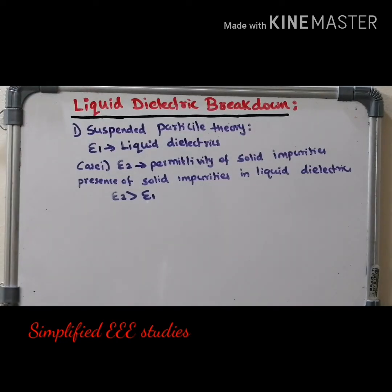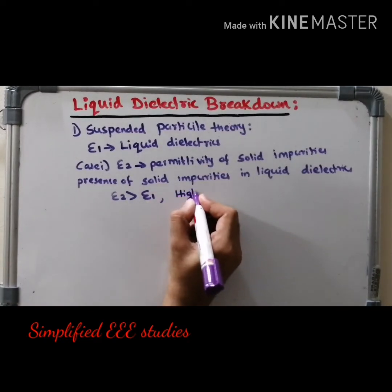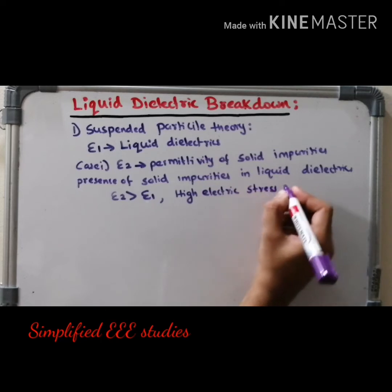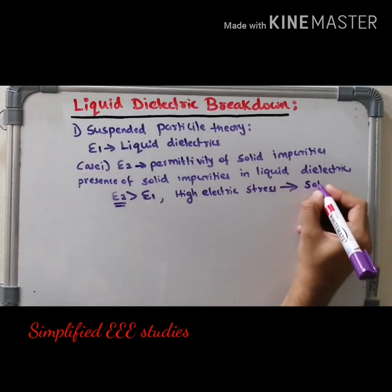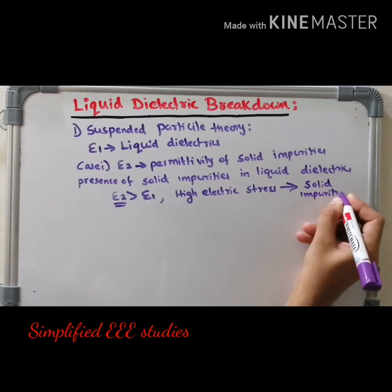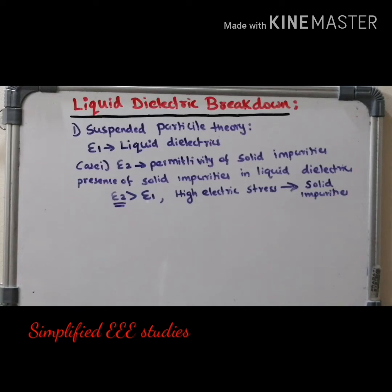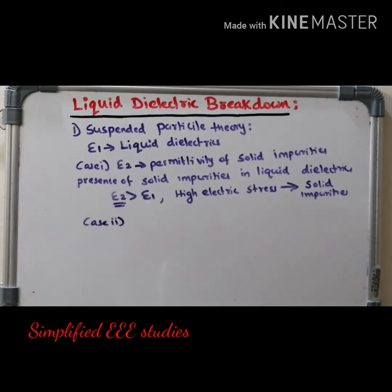Whenever you are applying high voltage over that particular liquid dielectric material, there will be high electric stress or force directed towards the solid impurities. Why? Because solid impurities have high permittivity, so the electric stress will be directly moving towards the solid impurities, resulting in dielectric breakdown — the liquid dielectric material gets conductive.